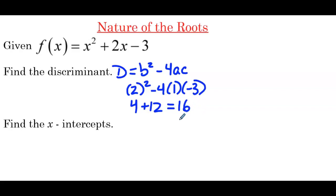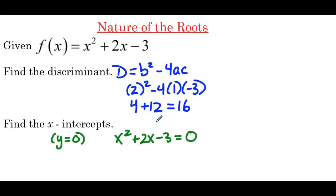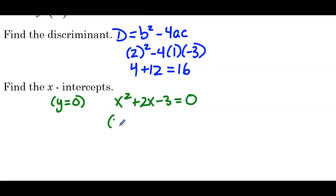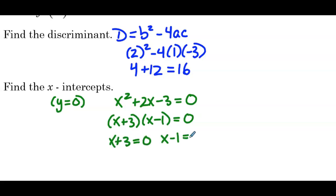So our discriminant is a perfect square. We know that we can factor the quadratic, which is helpful in answering the next question: find the x-intercepts, which occur when y equals 0. We'll set x² + 2x − 3 = 0. We can factor that as (x + 3)(x − 1) = 0. By the zero product property, either x + 3 = 0 or x − 1 = 0, so x = −3 or x = 1.